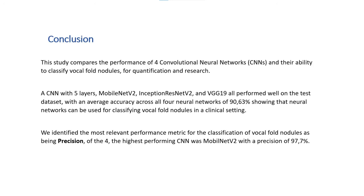In conclusion, we compared four neural networks and their ability to classify vocal fold nodules. A neural network with five layers, MobileNet version 2, Inception ResNet version 2 and VGG 19 all performed well on the test data, showing that neural networks can be used for classifying nodules in a clinical setting. We identified the most relevant performance metric for the classification of vocal fold nodules as being precision. Of the four neural networks, the best performing was MobileNet version 2 with a precision of 97.7%.